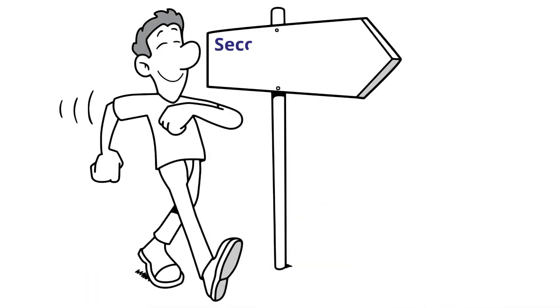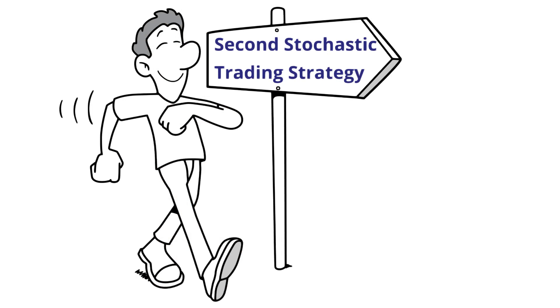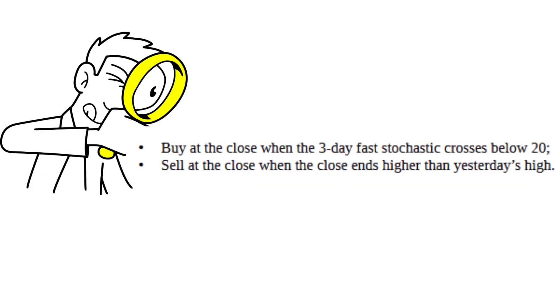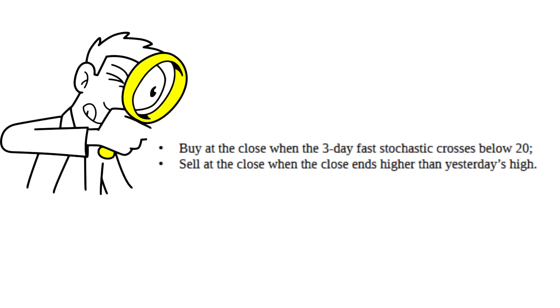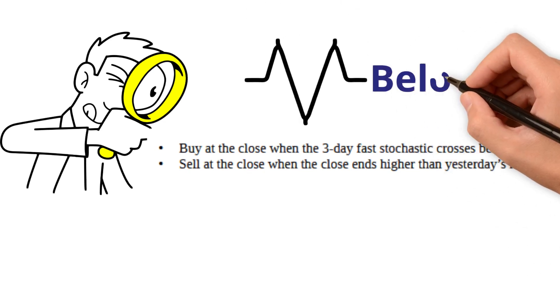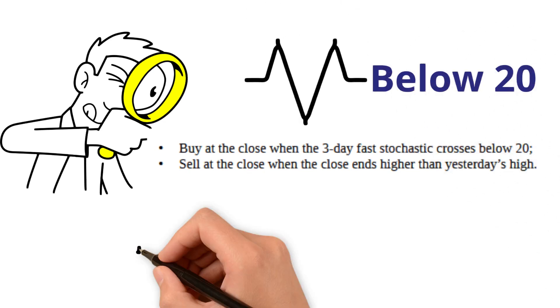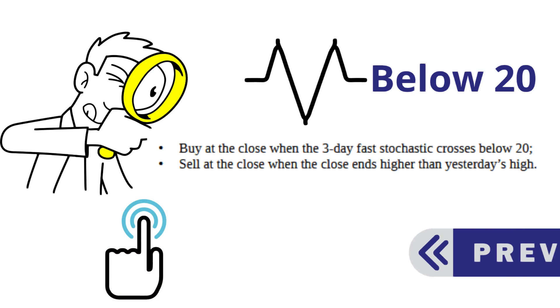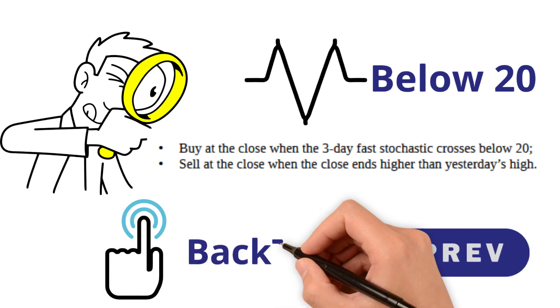Let's go to the second stochastic trading strategy. We increase the look-back period from two to three days and buy when the fast stochastic indicator crosses below 20. We use the same sell trigger as in the previous backtest.